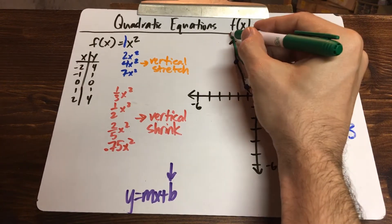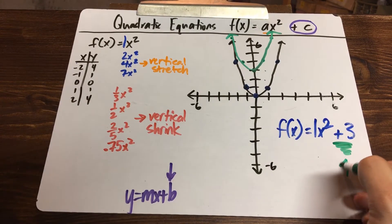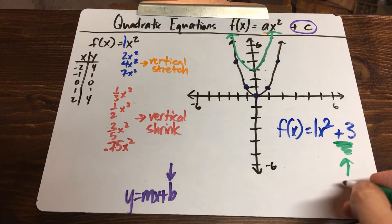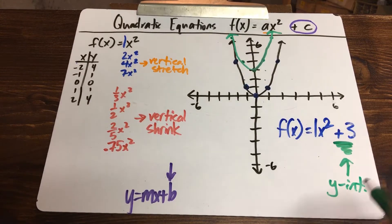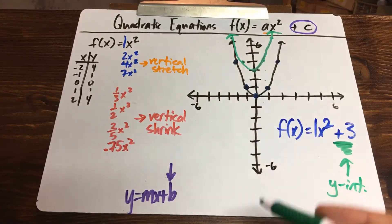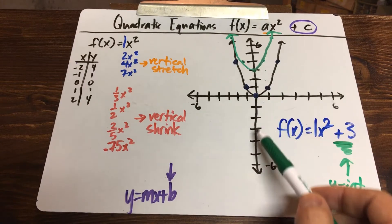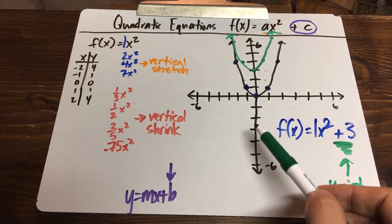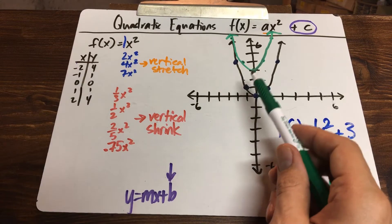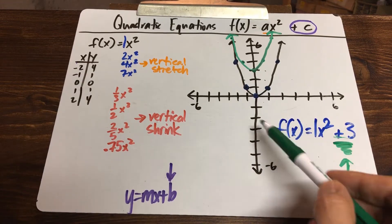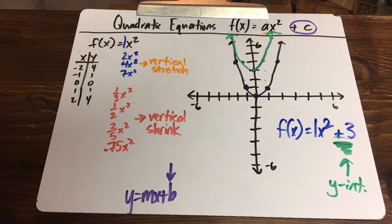Whenever we add this part at the end, it changes the y-intercept — it changes up or down. You either push it up or push it down. If this was a minus three, we'd move it down three places. If it was plus two, we'd go up two units. If it was minus five, we'd go down five units. That's what we're going to look at today.